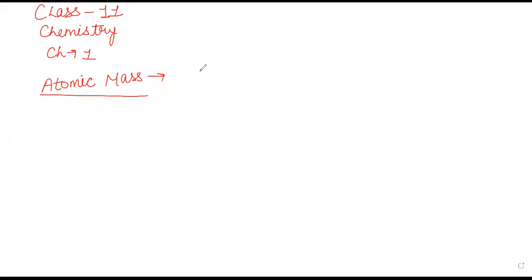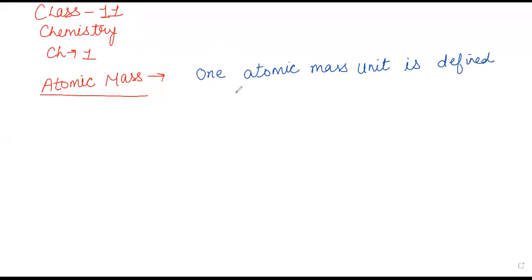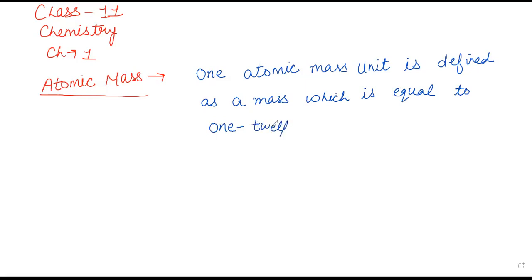How to define atomic mass? One atomic mass unit, that is AMU, is defined as a mass equal to 1/12th the mass of one carbon-12 atom. Carbon-12 atom की एक atom का mass का 12वां हिस्सा जो quantity बनके आता है, that is called one atomic mass unit.